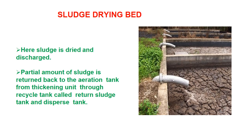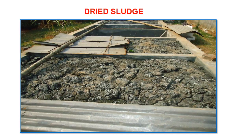After the sludge thickening unit, it goes to the sludge drying bed. In the picture we can see an actual sludge drying bed with the dried sludge, which can be used as fertilizer, for landfilling, or even for burning depending on the nature of the sludge.